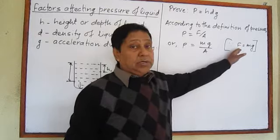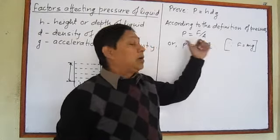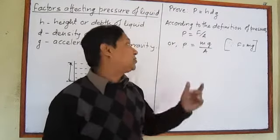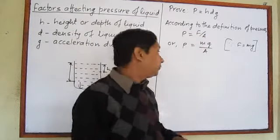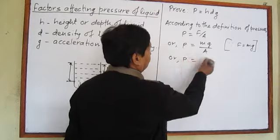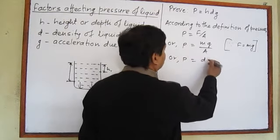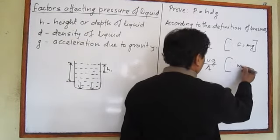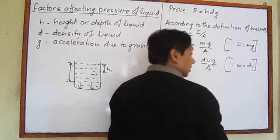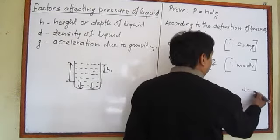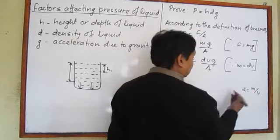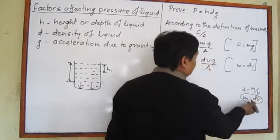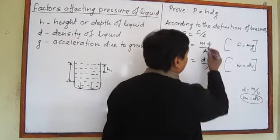Weight of a body is the product of its mass and acceleration due to gravity, so in place of weight force we write m × g. Further, in place of mass we can write d × V, because density is defined as mass per unit volume — that is, density = mass / volume — so mass equals density times volume.